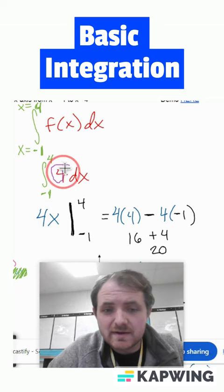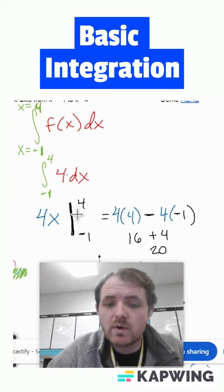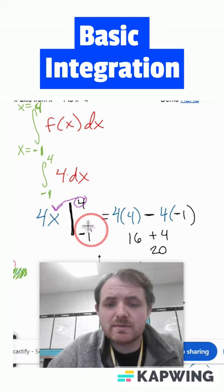Now, since you're given that you're supposed to go from negative 1 to 4, typically most people write it like this, with this vertical bar and then negative 1 to 4, and then you are just plugging in this 4 right there, and then you are subtracting it when you plug in the negative 1 right there.